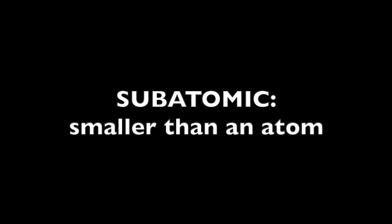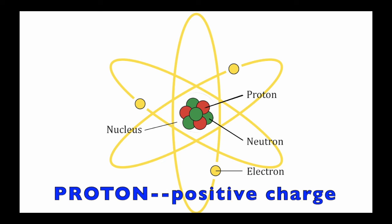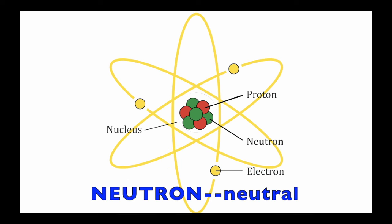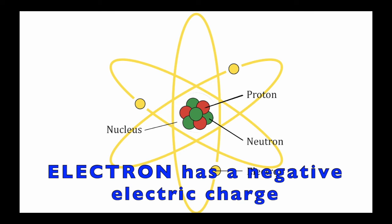Atoms are constructed out of three main subatomic particles, and subatomic just means smaller than an atom. These particles are the proton, which has a positive charge. The neutron is neutral, which means it does not have a charge. And the electron has a negative electric charge.